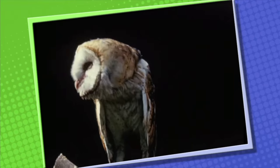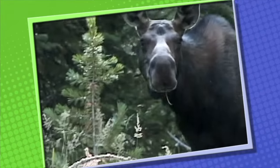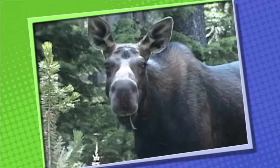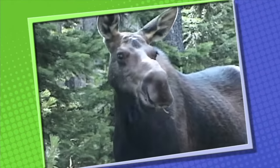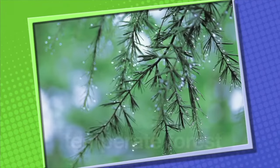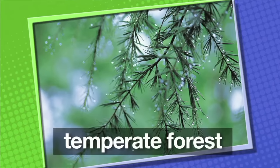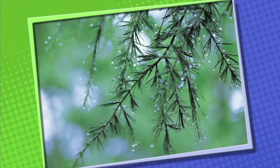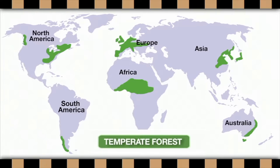On the ground, you'll find large animals like moose, the largest member of the deer family. The next type of forest habitat is the temperate forest. Temperate forests are found on the North American continent, South America, Europe, Africa, Asia, and Australia too.